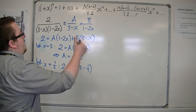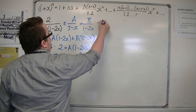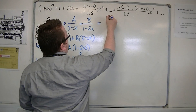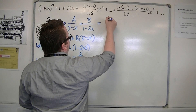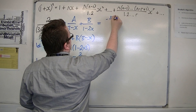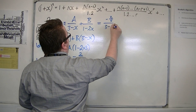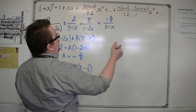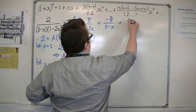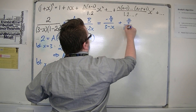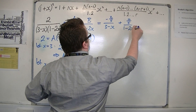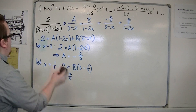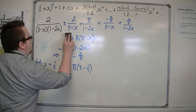So this means that the expression is equal to minus 2 fifths over (3 minus x) plus 4 fifths over (1 minus 2x). So that's the partial fractions bit done.